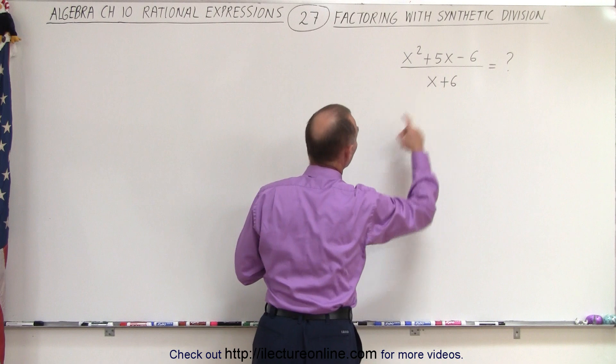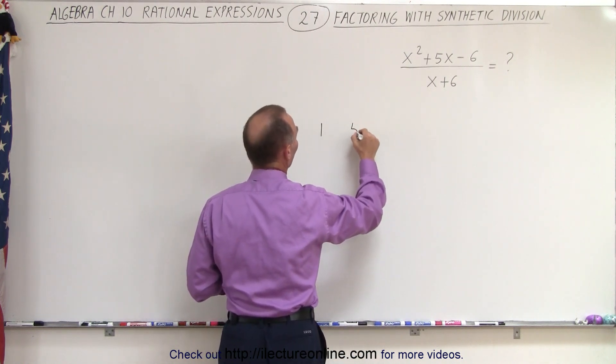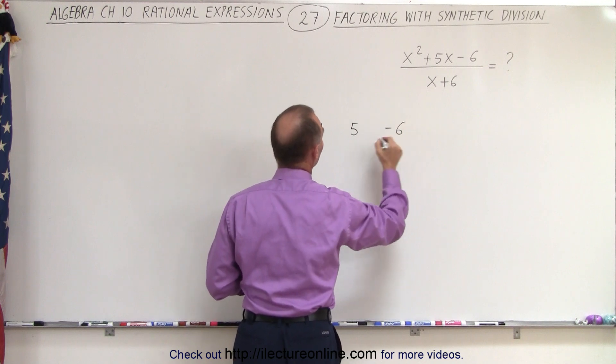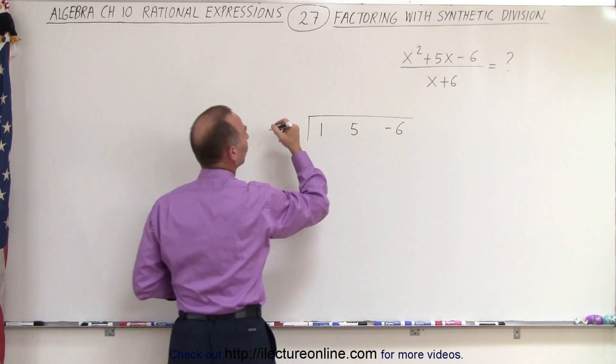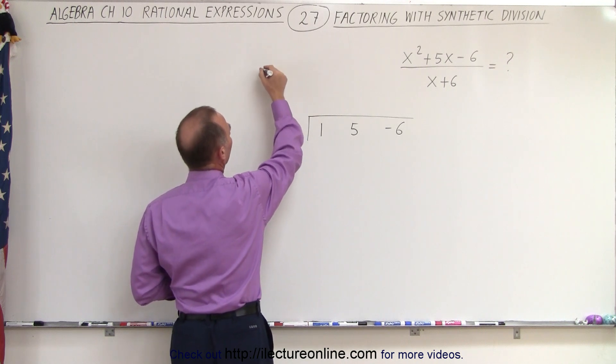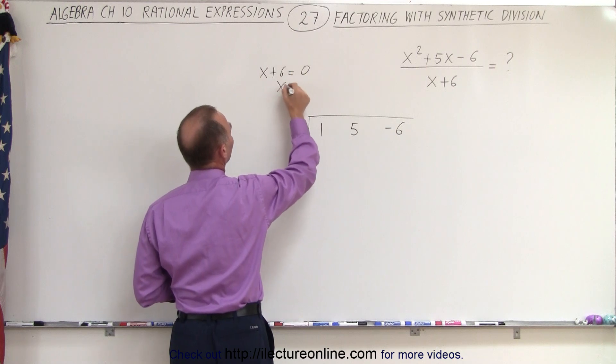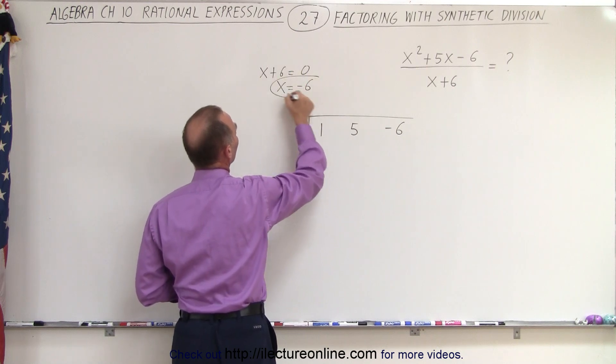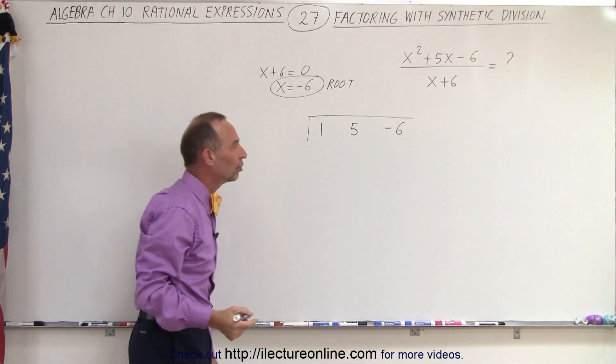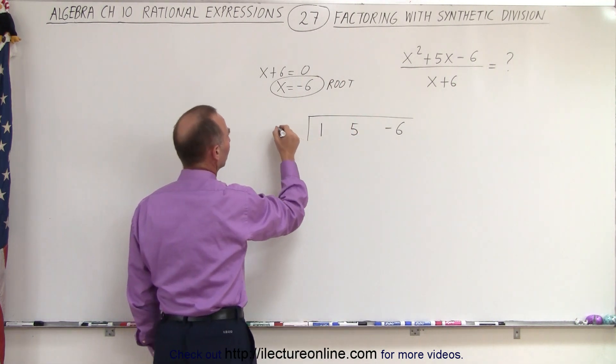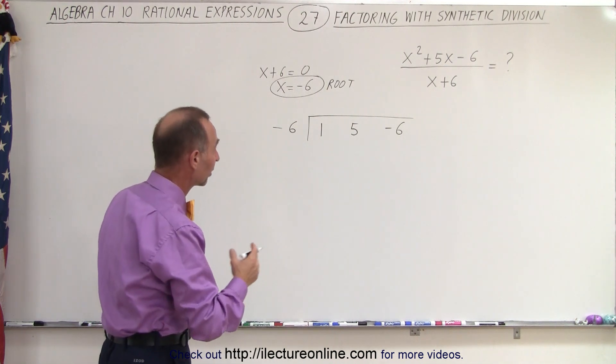We simply put down the numerical coefficients of the polynomial: 1, 5, negative 6, and then we put in the root. So the root in this case would be x plus 6 equals 0. That means x equals minus 6, and this is the root of the denominator, so that's what we're going to put down in here, minus 6. And now we're going to solve it using synthetic division.